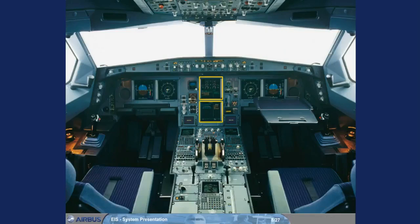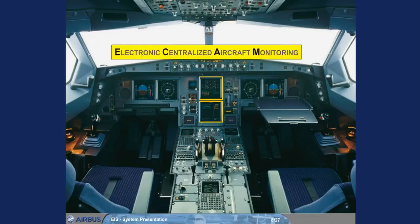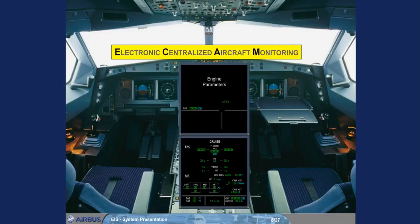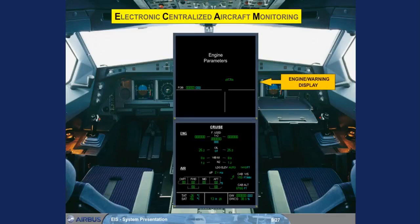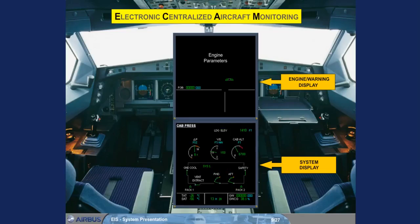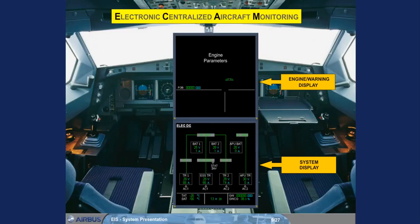The two displays in the center are dedicated to the Electronic Centralized Aircraft Monitoring System, ECAM. At this stage we will simply introduce the ECAM displays and the related controls. The upper ECAM display is called the Engine Warning Display, and the lower ECAM display is called the System Display. Various aircraft system parameters can be viewed on these screens. As an example, you can see a sequence of all System Display pages, one after the other.